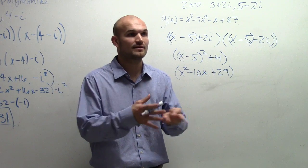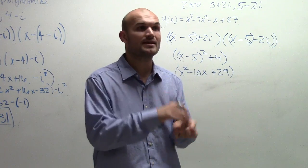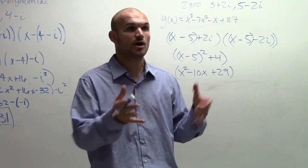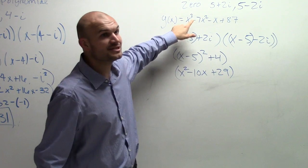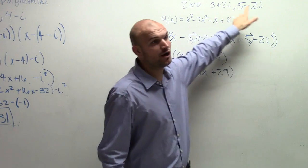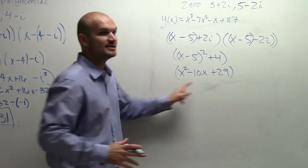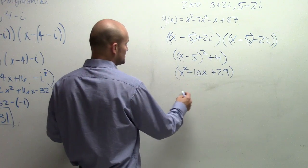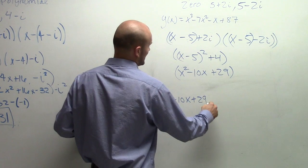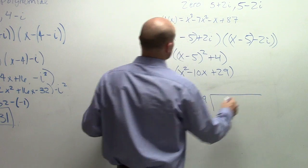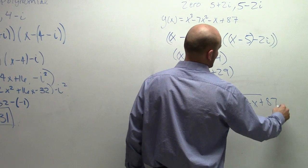Think of it like this: if you have factors 2 and 3, multiply them to give you 6, you can still divide 6 into 12 to find all the factors. Remember, we're trying to find all the zeros. And since this is to the third power, do I have all of my zeros? No — I still have one more. So I need to continue to factor. I have x squared minus 10x plus 29 going into x cubed minus 7x squared minus x plus 87.